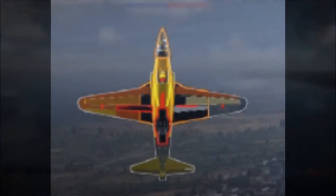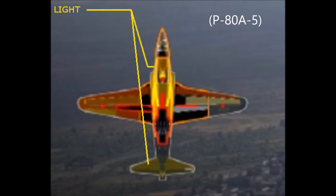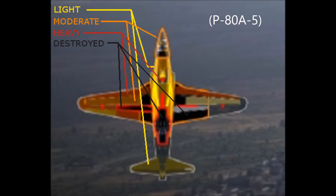This is your aircraft damage indicator. It shows a top-down view of your aircraft, including all internal components that may be affected in combat. Damage severity is shown through colors: yellow for light damage, orange for moderate damage, red for heavy damage, and black for destroyed components.